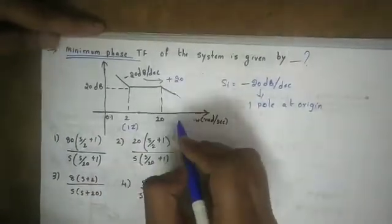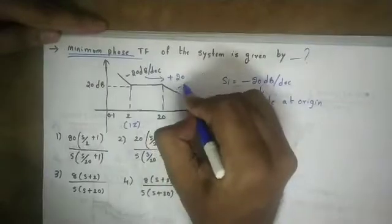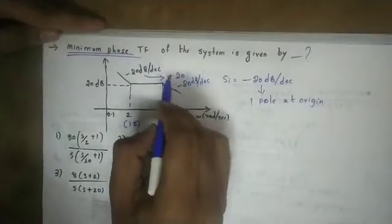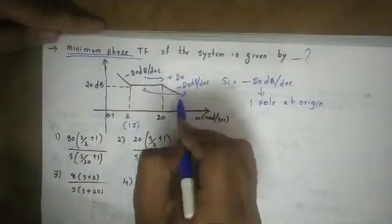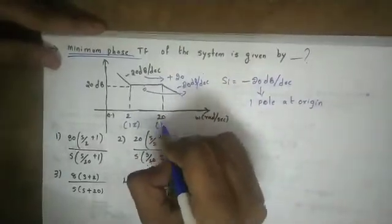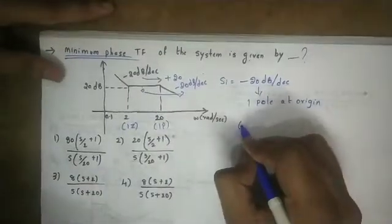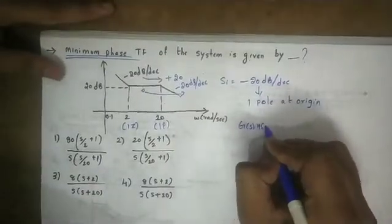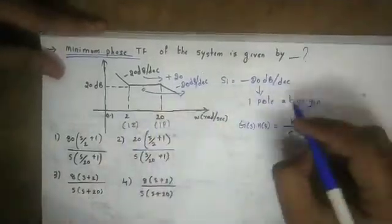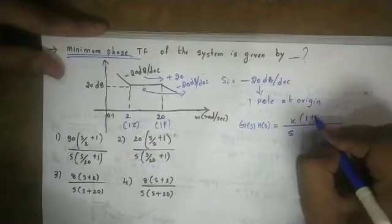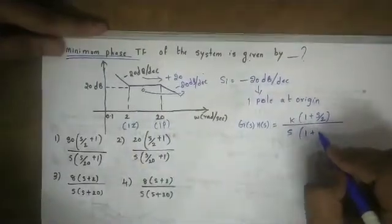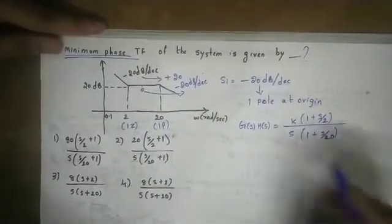We already have one pole at the origin, so the transfer function starts as K divided by s. We have a zero, so the numerator is (1 + s/2). Dividing by the denominator: here we have a corner frequency at 20, so the denominator includes (1 + s/20). This gives the overall structure of the transfer function.